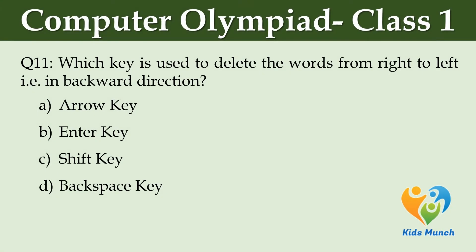Which key is used to delete words from right to left, i.e., in the backward direction? Option A: Arrow key. Option B: Enter key. Option C: Shift key. Option D: Backspace key.